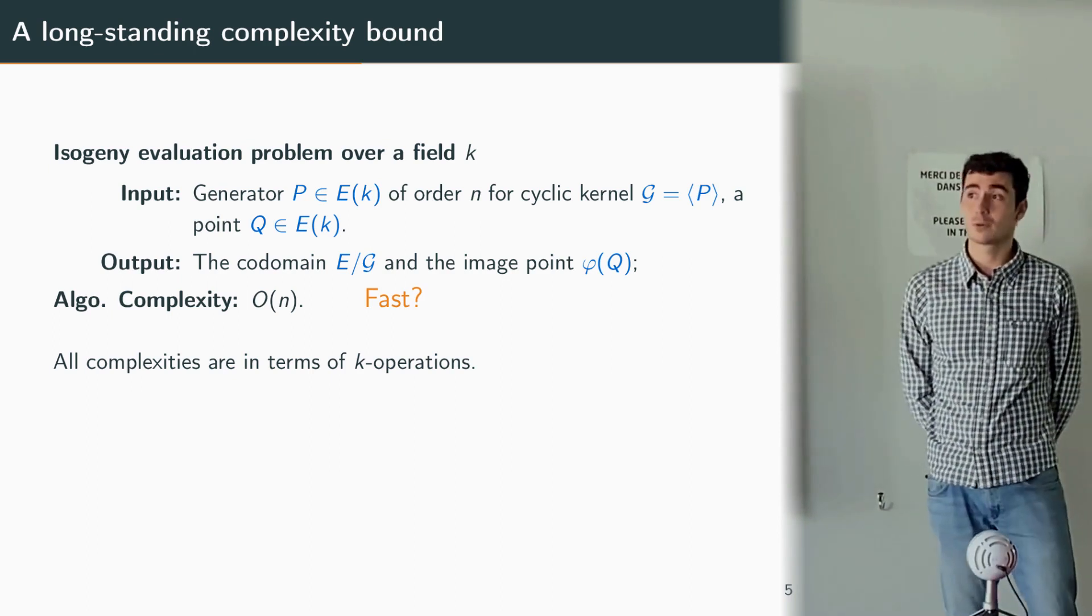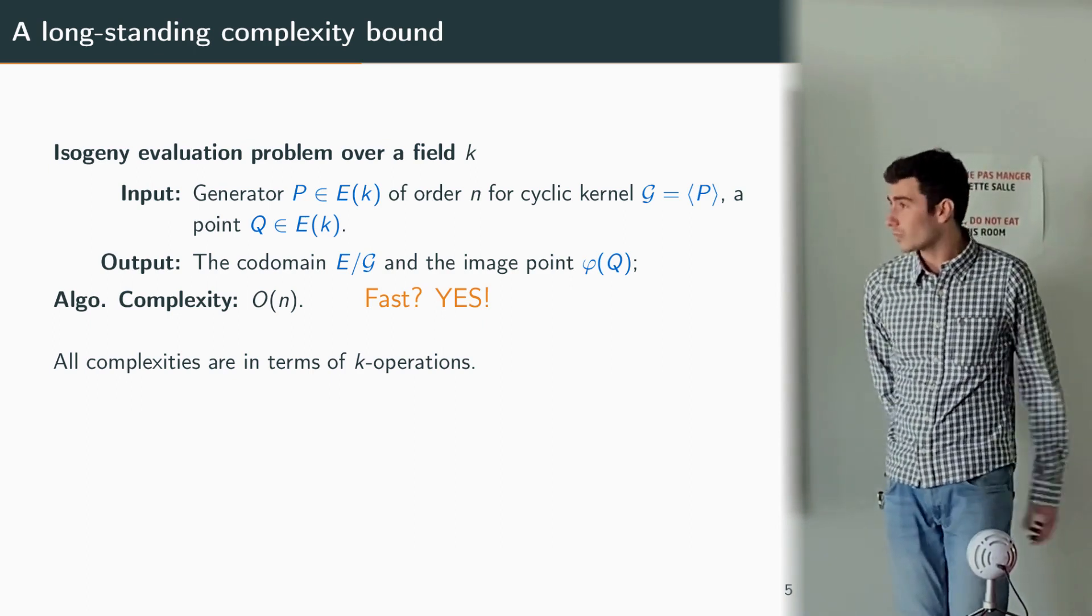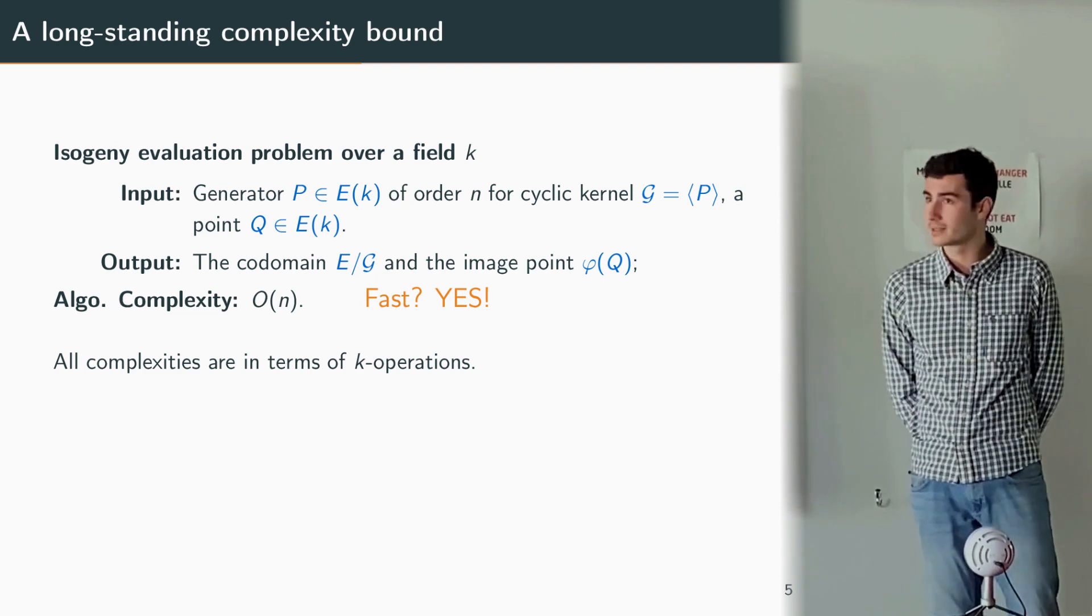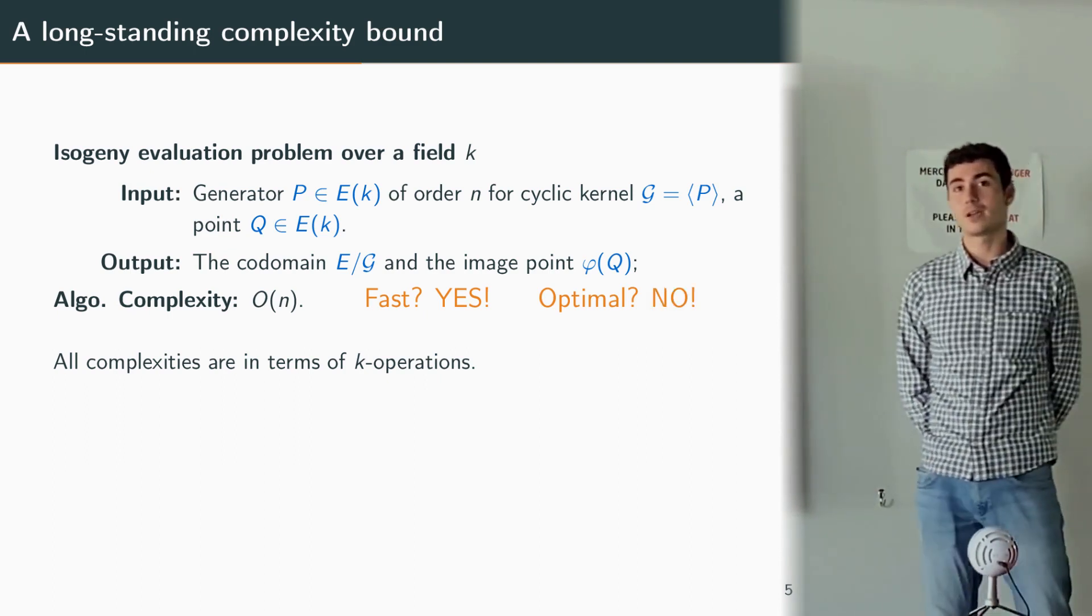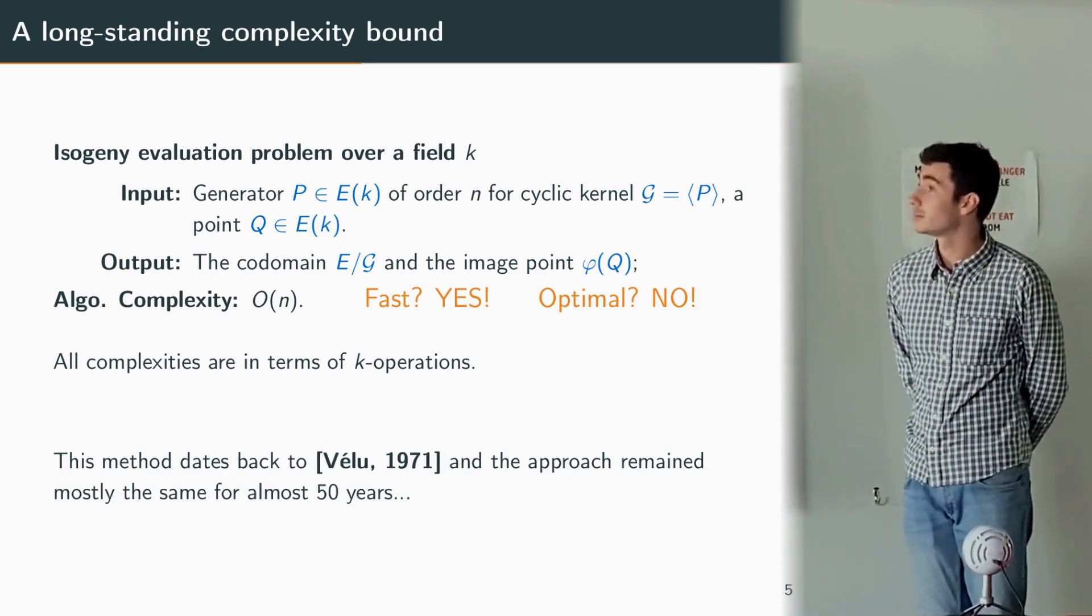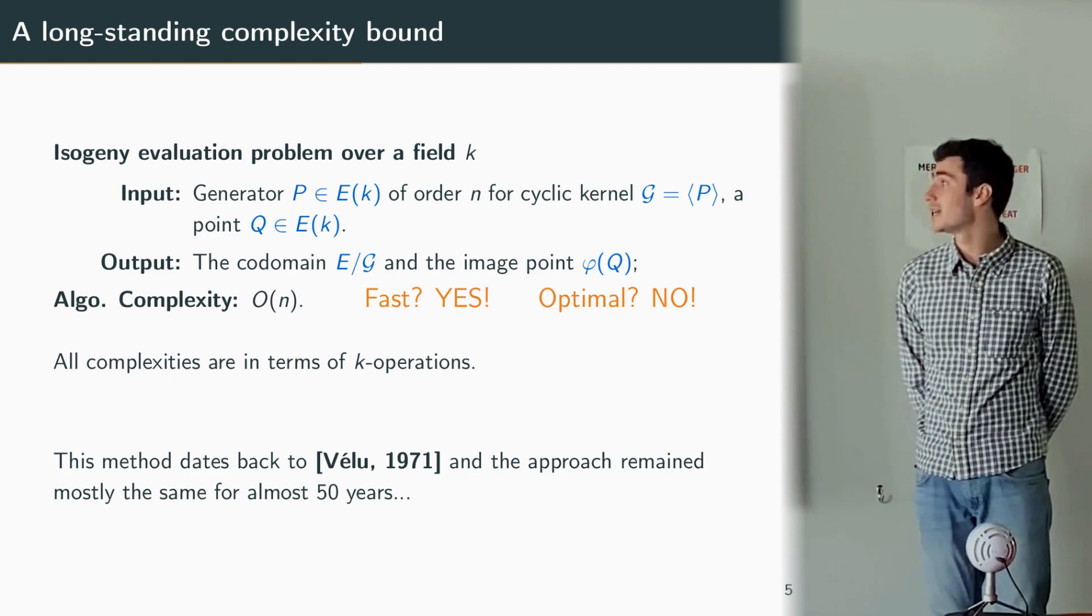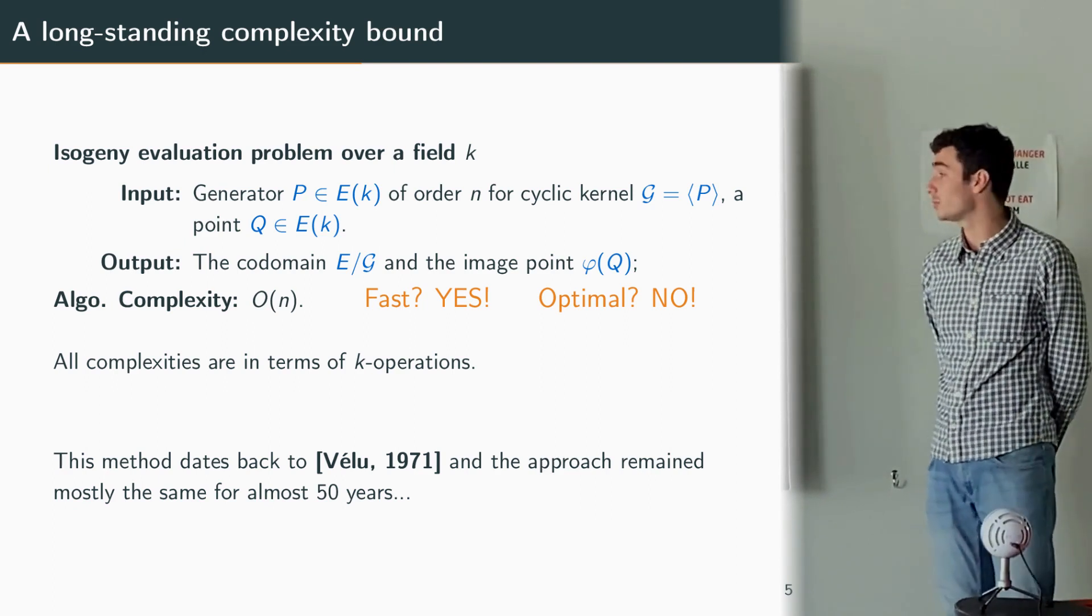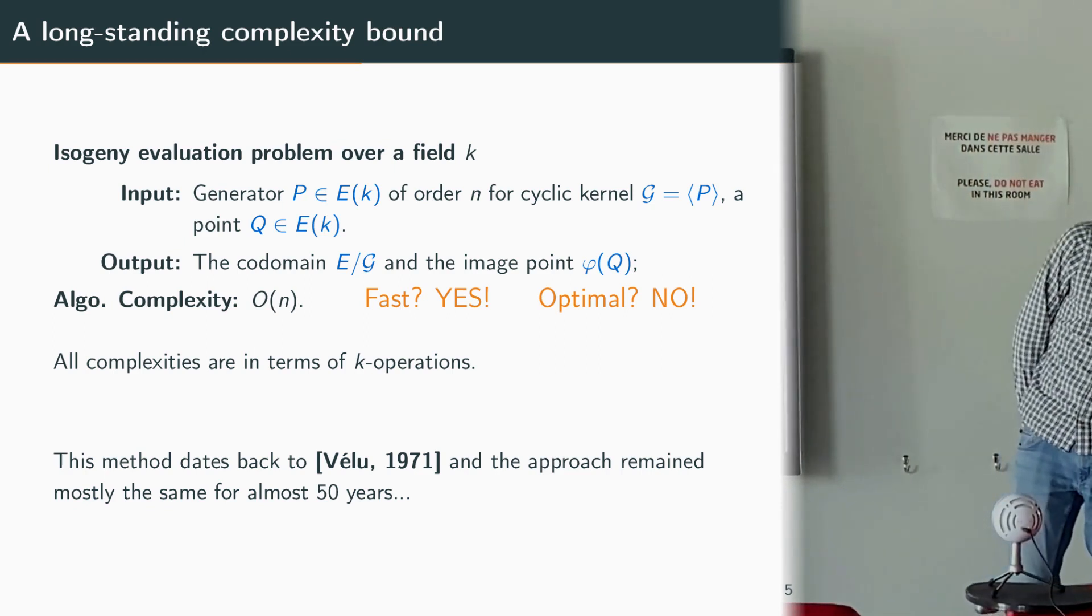And so is it fast? Well as you can see it's linear basically in the size of the problem, so we can answer that it's quite fast already and of course this has allowed to produce some quite efficient schemes based on isogenies. But to the question is it optimal? Well of course the answer is no, otherwise I wouldn't be here today. In fact this method to compute isogenies dates back to Jacques Velu and his seminal paper of 1971 where he first gave these expressions using polynomials. Basically the approach for solving these evaluations and computations problem has mostly remained the same for the last 50 years, until today.